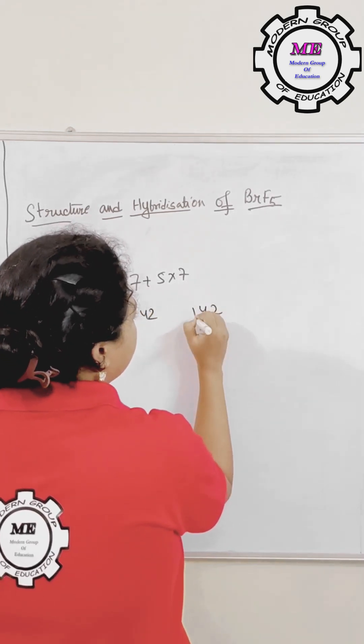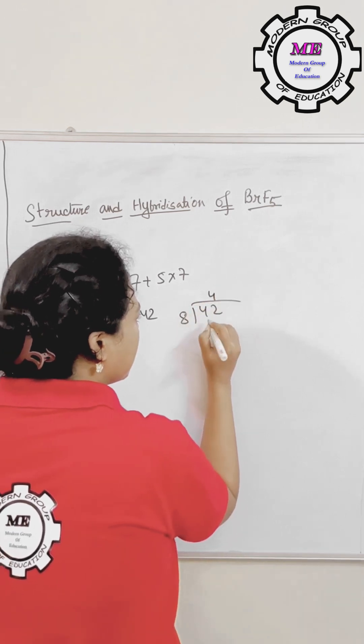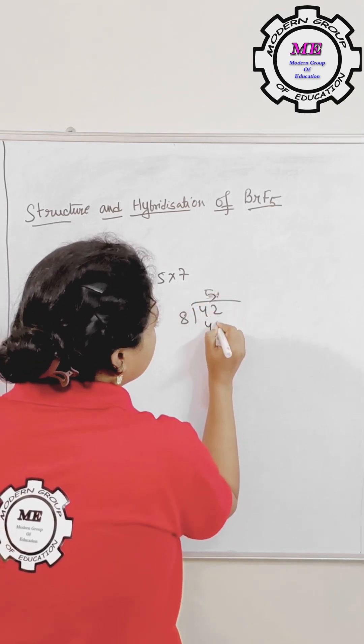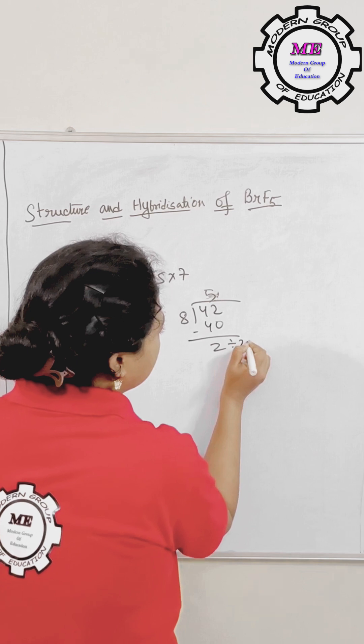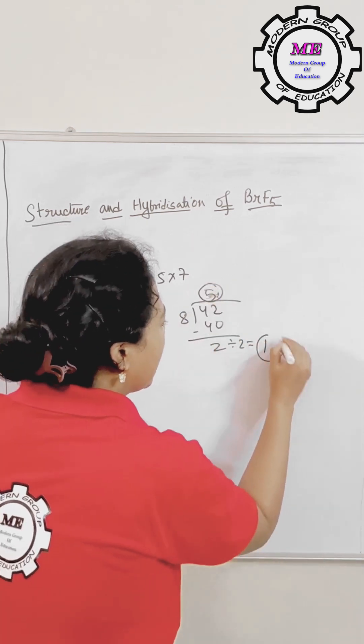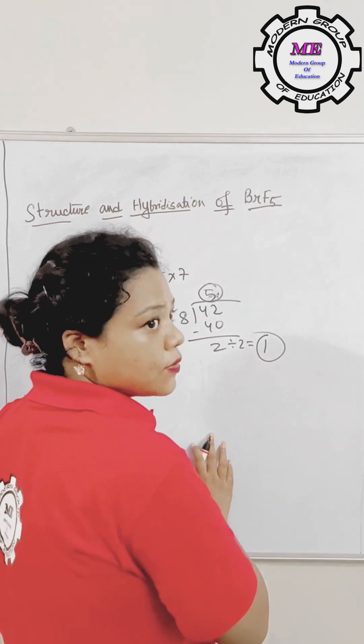You have to divide it by 8. 8 into 4 is 32, 8 into 5 is 40. So minus 2 divided by 2, that is 1. So 5 bond pair and 1 lone pair, that is total equal to 6.